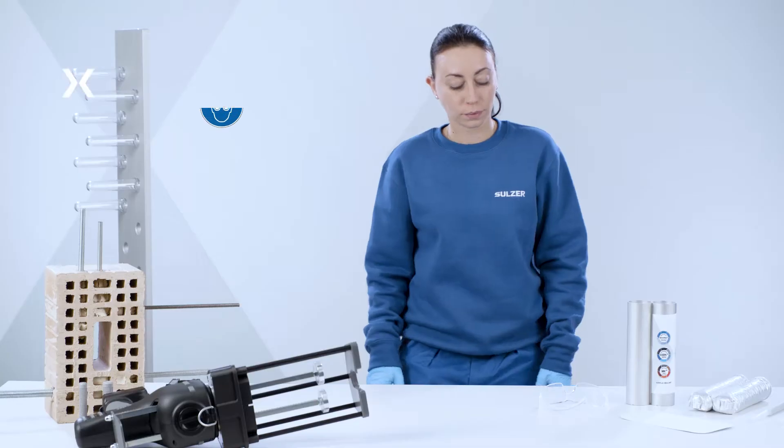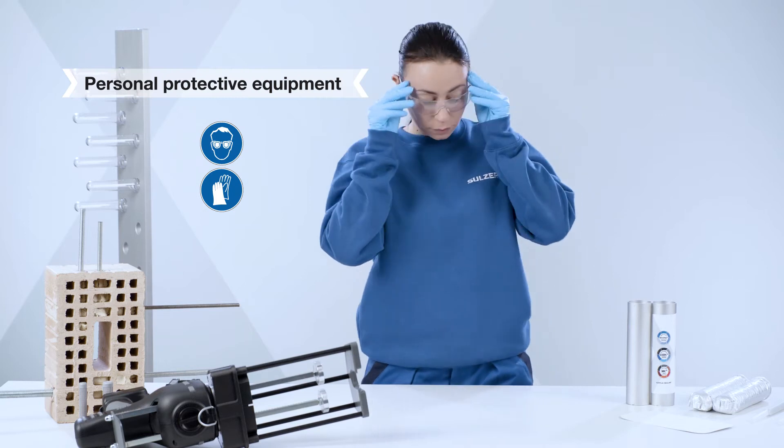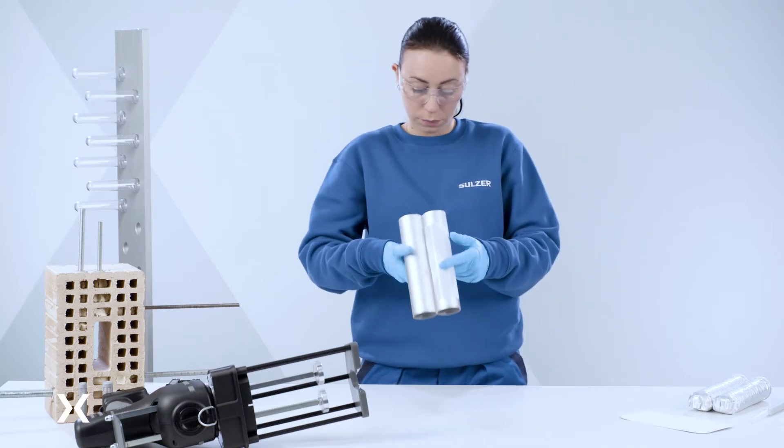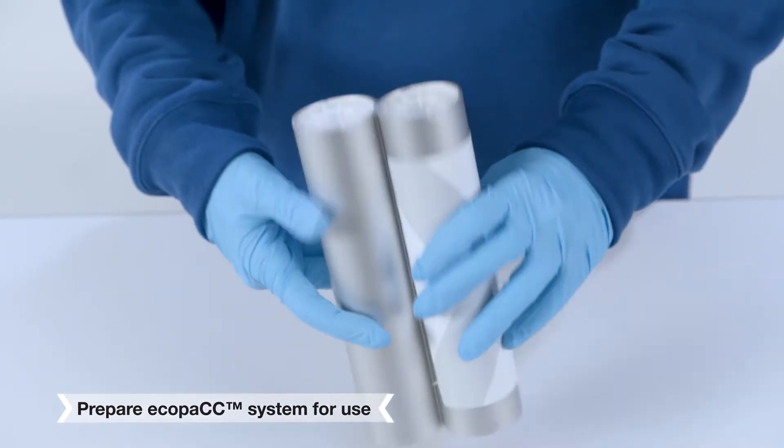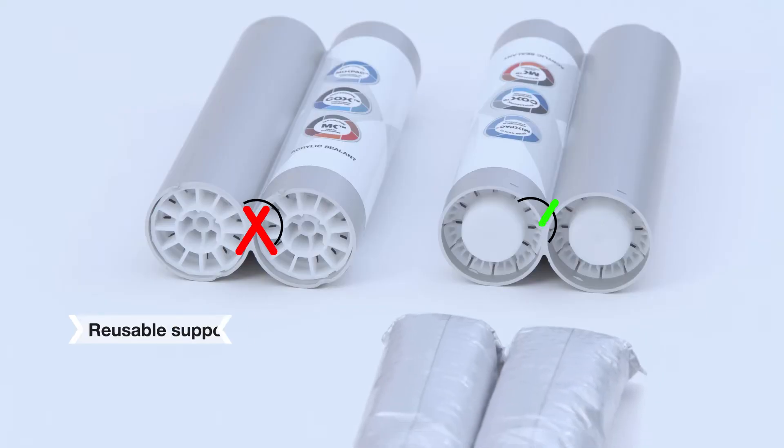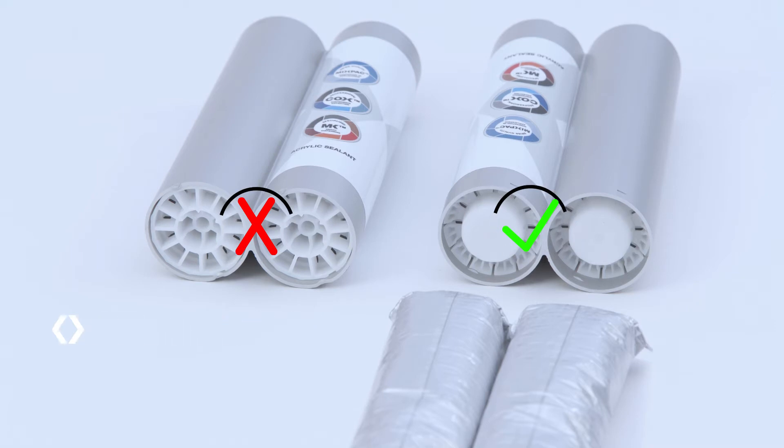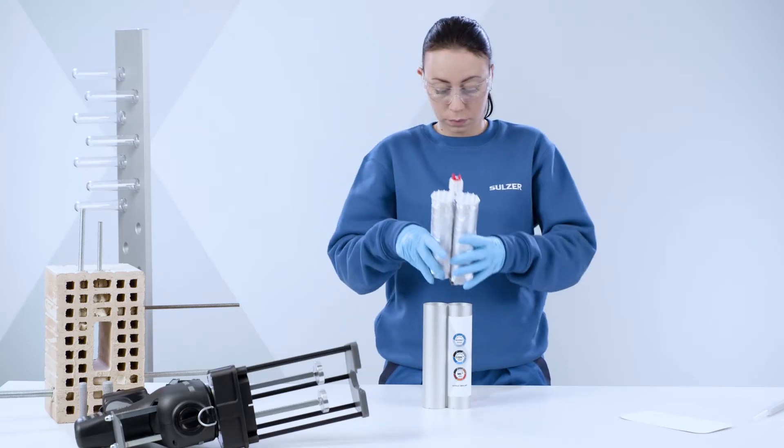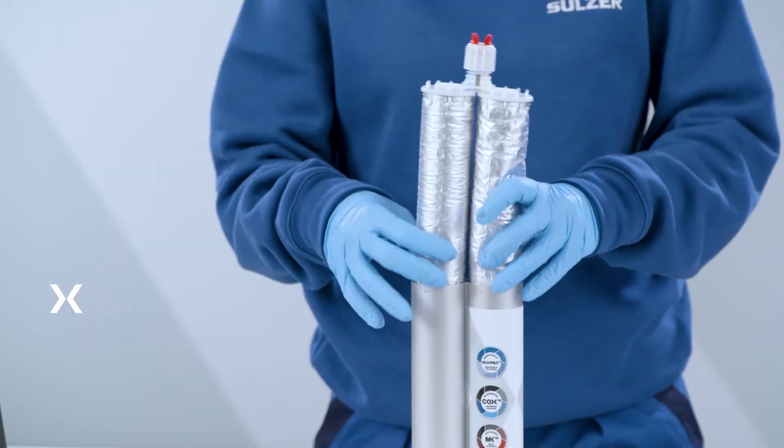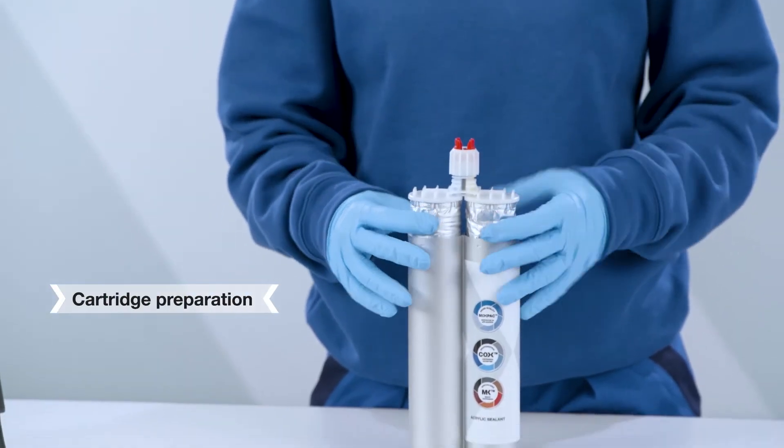Ensure personal protection is worn. To prepare the EcoPak system for use, take the reusable support sleeve and identify the correct orientation. Insert the collapsible EcoPak cartridge, making sure it is the right way up.